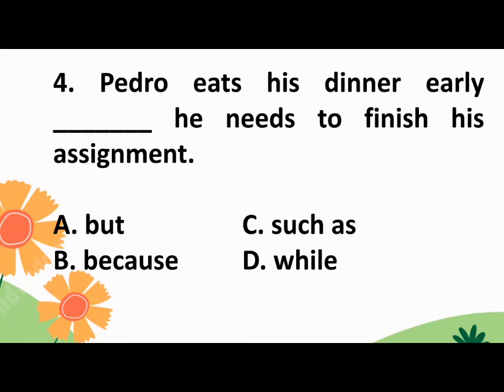Number 4: Pedro eats his dinner early blank he needs to finish his assignment. A. But, B. Because, C. Such as, or D. While?